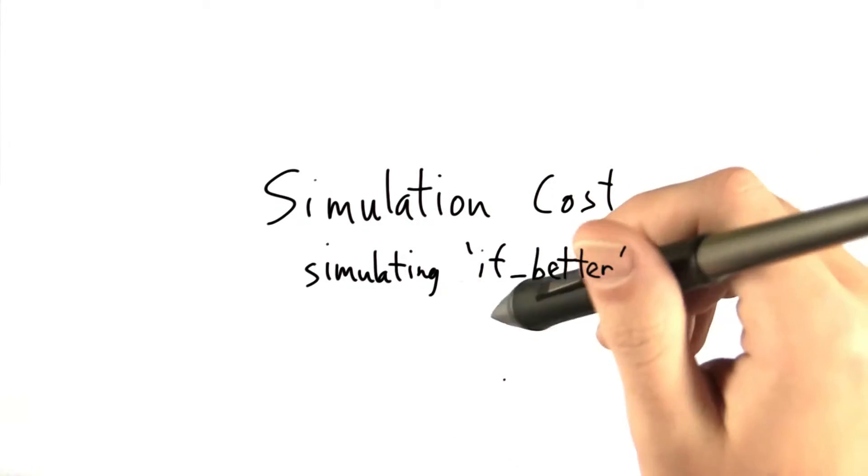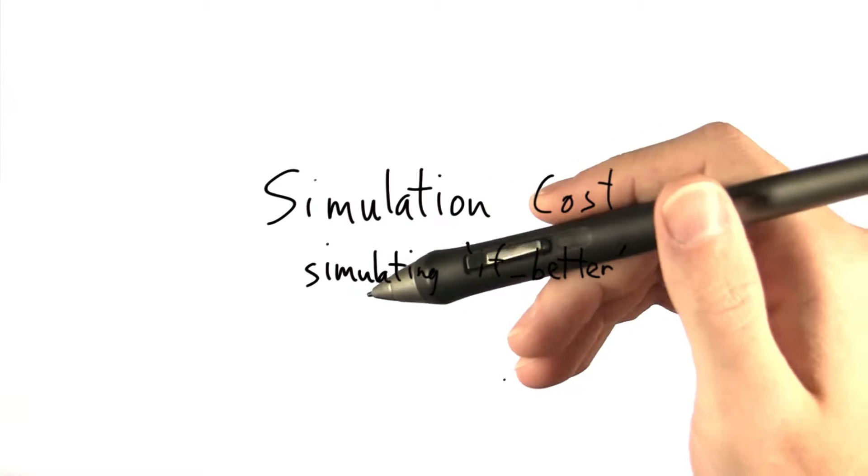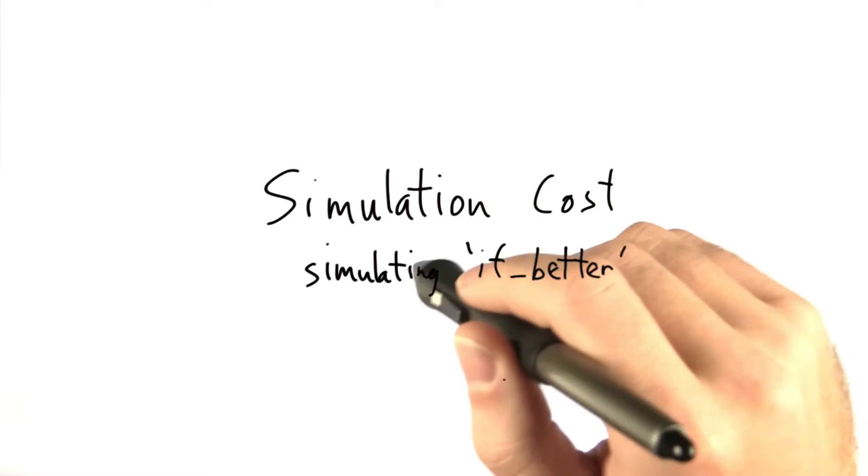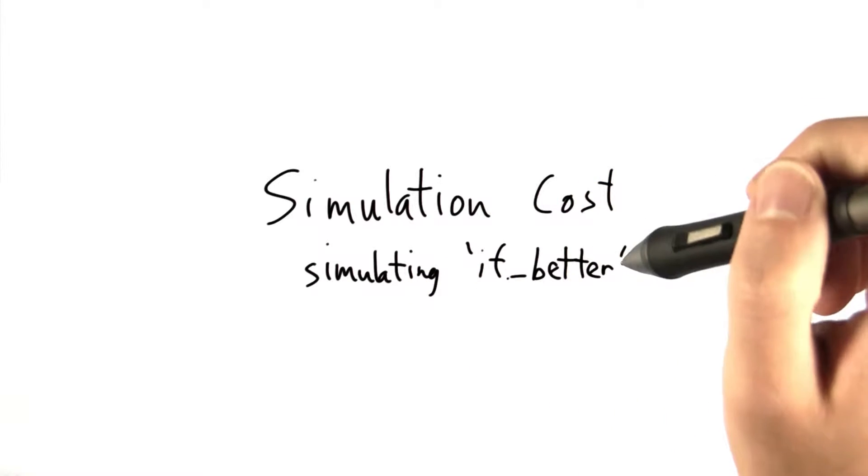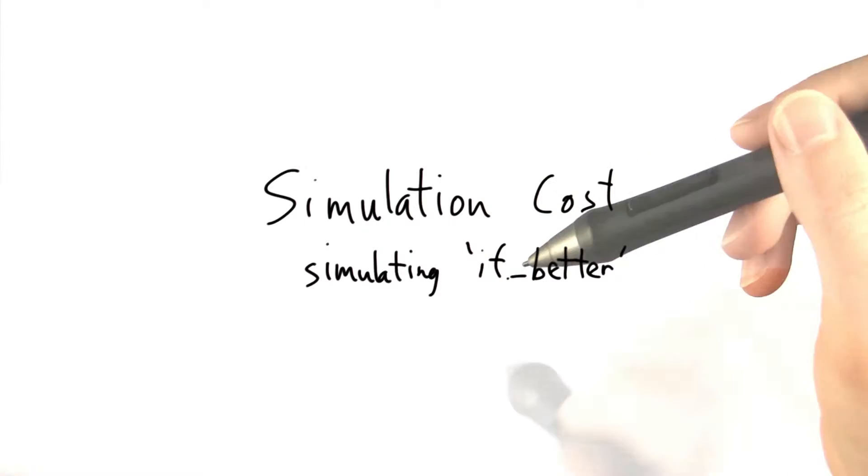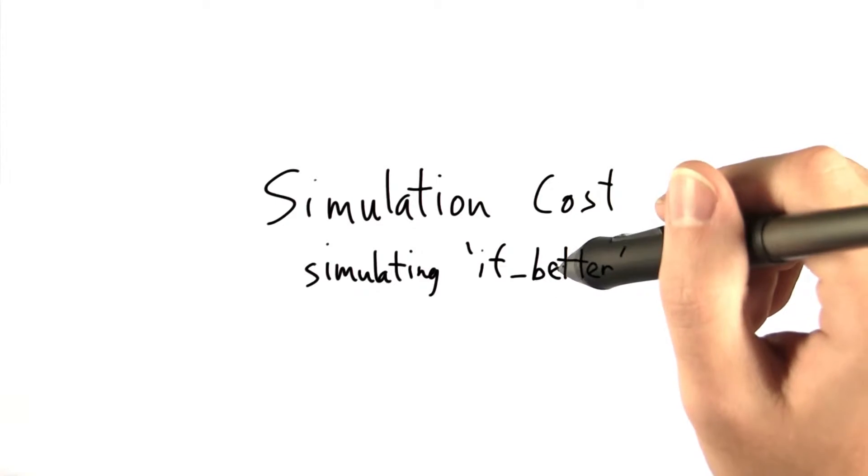Let's say we are simulating a non-deterministic RAM machine inside of a deterministic RAM. The main cost of that is simulating the if-better function, since it's really the primary difference between a deterministic RAM and a non-deterministic one. But what exactly is the cost of simulating if-better?